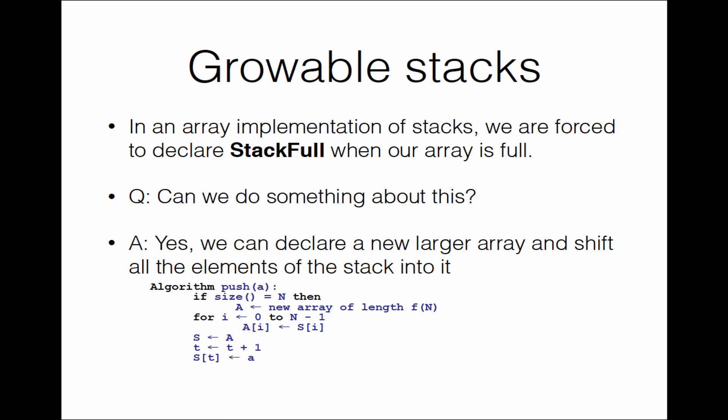The example we will look at is that of growable stacks. When we implement a stack using an array, when the array is full we are forced to declare a stack full exception, although there may be memory available. So can we do something about this? The answer is yes — we can declare a new larger array and shift all the elements of the stack into it. There is some pseudocode here which shows how it is done: when the size of the stack gets to n, where n is the size of the declared array, we choose a new array of length f(n), shift all the elements one by one from the old array into the new array, and then insert the new element into that space.